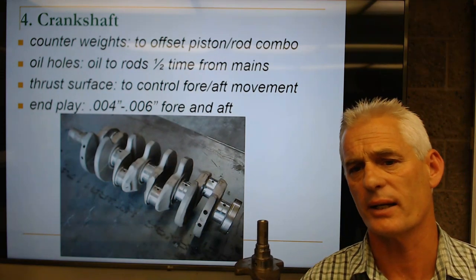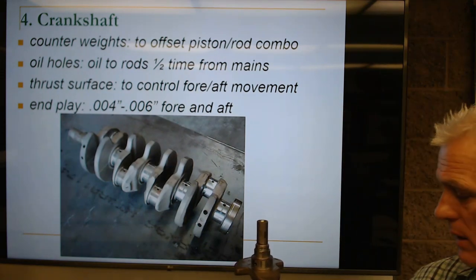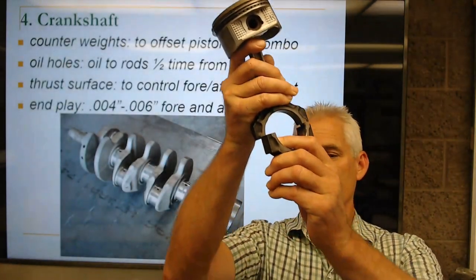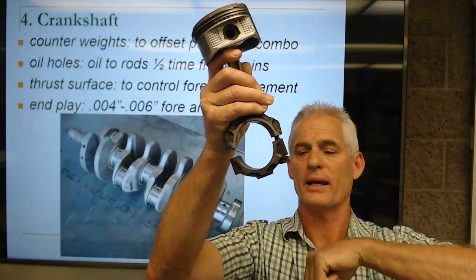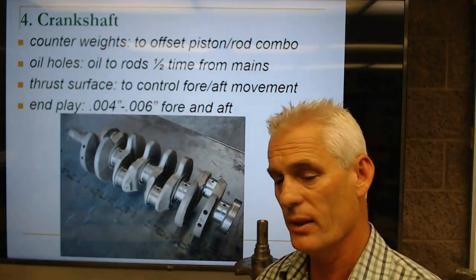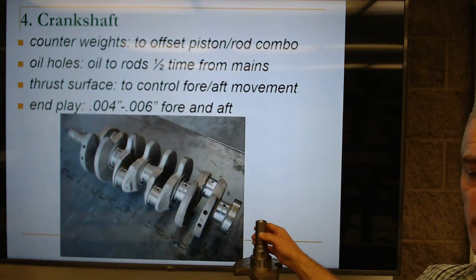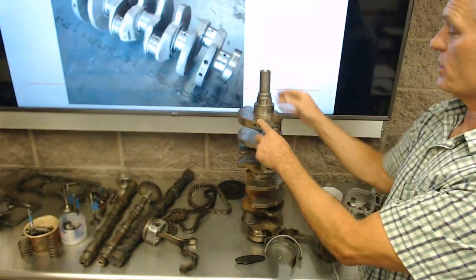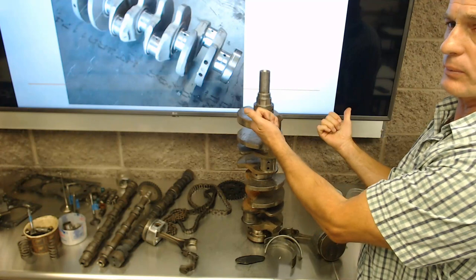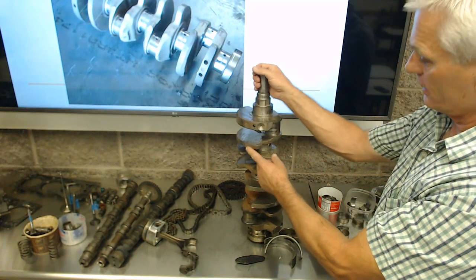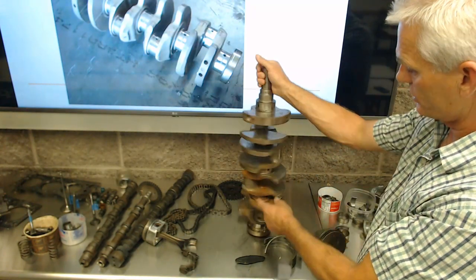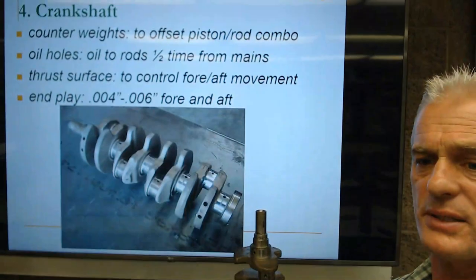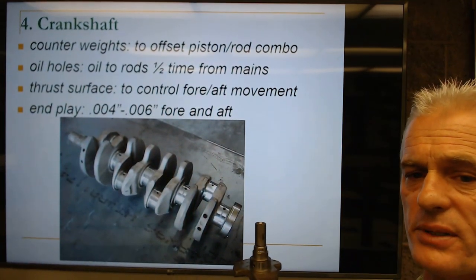The crankshaft also has counterweights to offset the piston and rod combination. When we throw a piston up toward top dead center, we've got to throw weight down or we'd have dramatic vibration. You can see the big heavy counterweights on this crankshaft — they're opposite the rod journals, so when the rod is up, the counterweight is down. All the counterweighting offsets the weight of the rod-piston combination being thrown to the top of the cylinder.